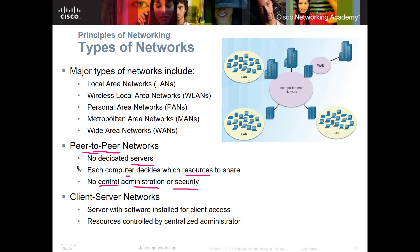A client-server network involves some type of server with a network operating system (NOS). You'd have either a Linux server or a Windows server offering services such as DHCP, web, file, or print services to client or end devices. Resources are controlled by a centralized administrator. You have common logins or single sign-ons so you can log on to multiple computers with the same username and password, and you may have roaming profiles where your information copies down to each end device.